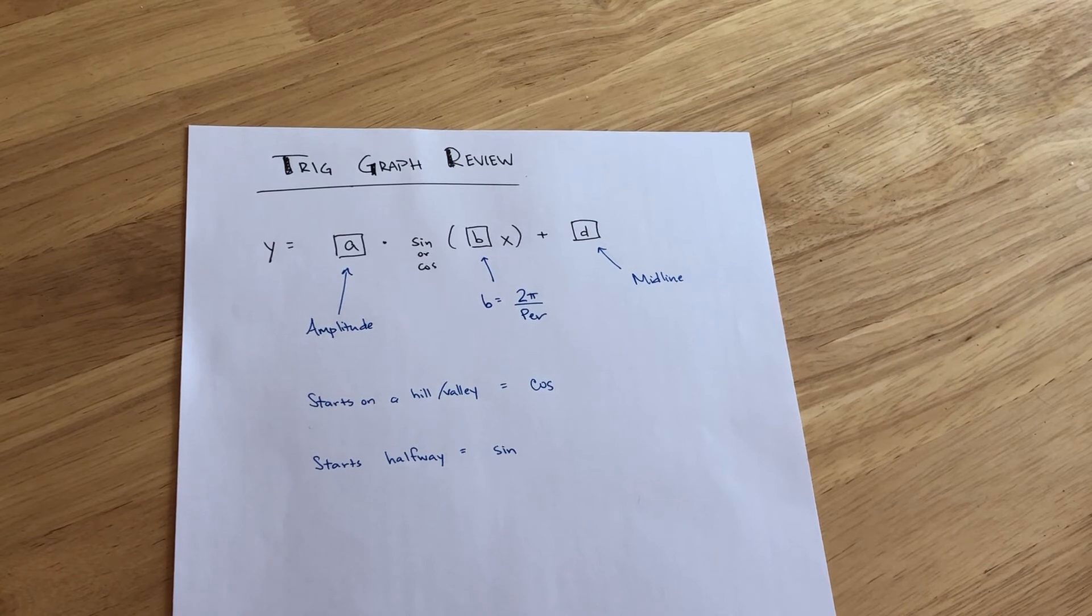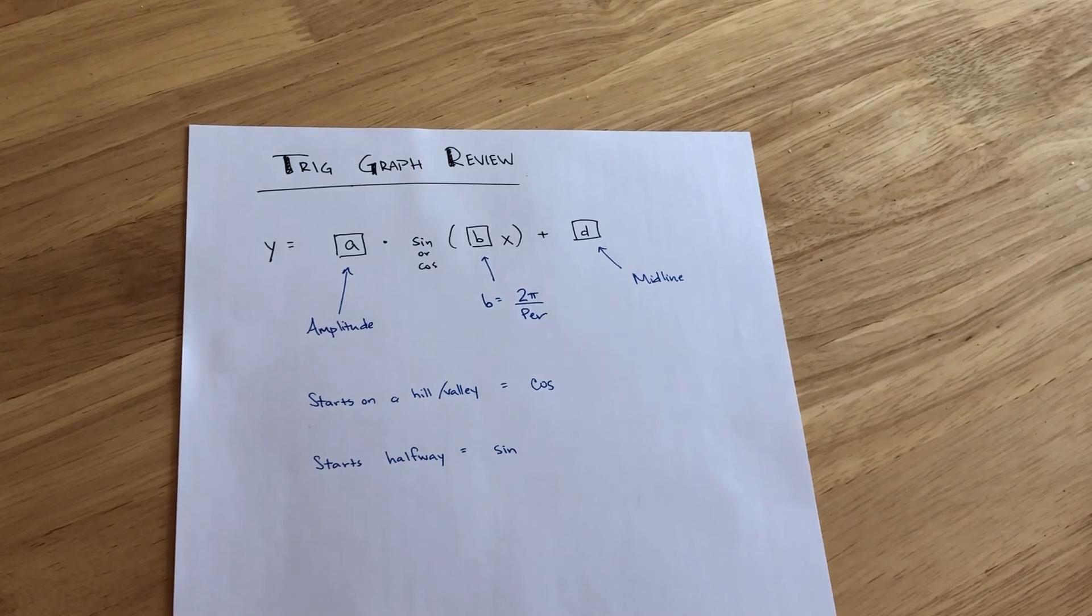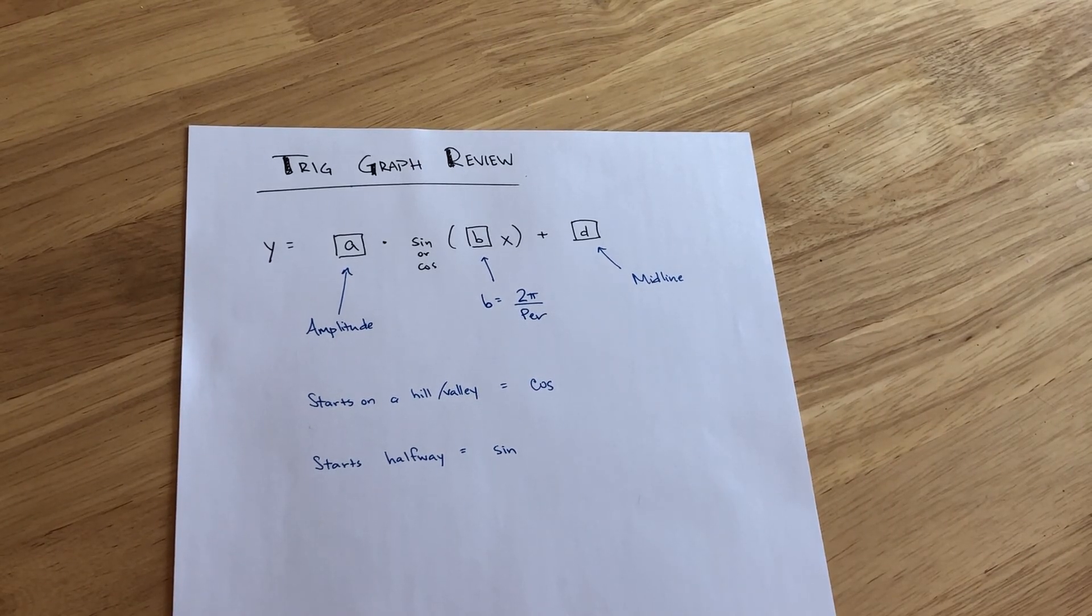But, if on the y-axis, the graph is actually starting right on the midline, which means we're halfway between the peak and the valley, then you know that that is a sine function.